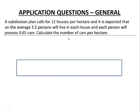This is a density calculation that is very common in building construction science situations. You might wonder how we can have part people and part cars. In density calculations this comes up because we are calculating averages, so we wanted to include an example like this for our application questions.